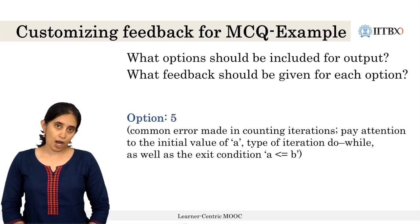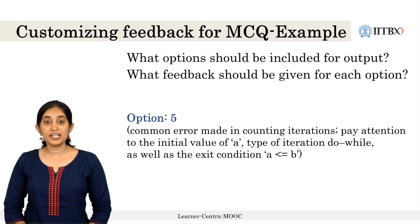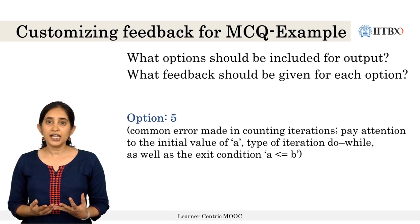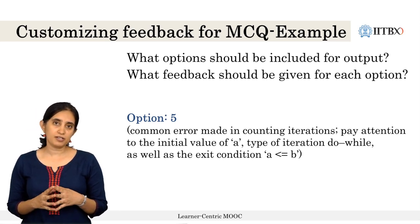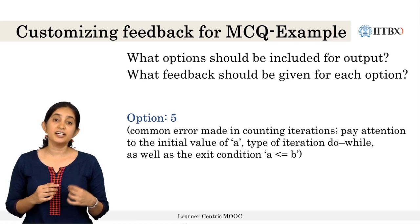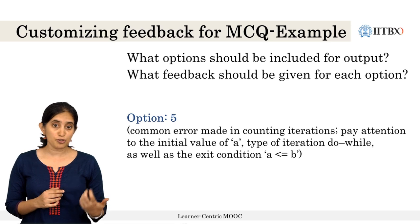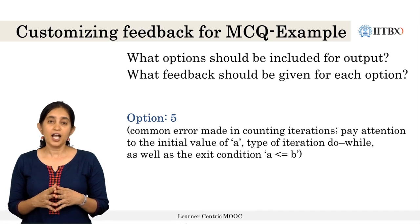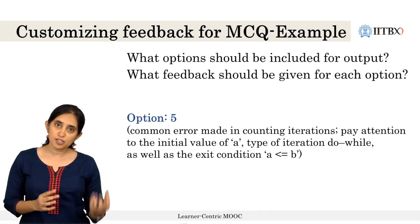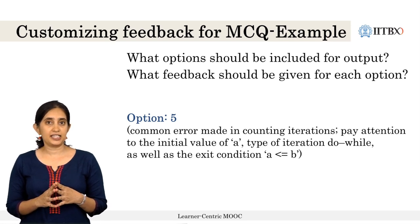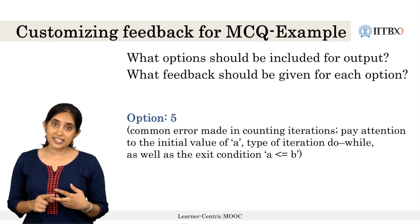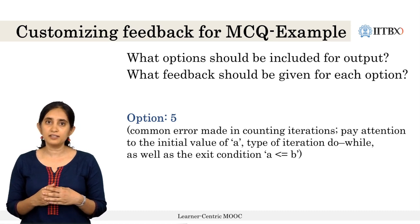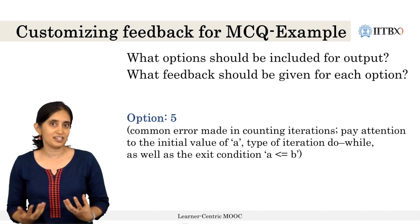Another possible option is 5. This is a common error that even experienced programmers make in counting iterations, because they may not have paid attention to the correspondence between the entry values of A, the type of iteration used — here it is a do-while loop — and the exit condition. The customized feedback for this option should tell the learner to pay attention to the initial value of A, the exit condition, and the type of iteration. Note that this feedback also helps the learner decide what to do next — it is constructive in nature.